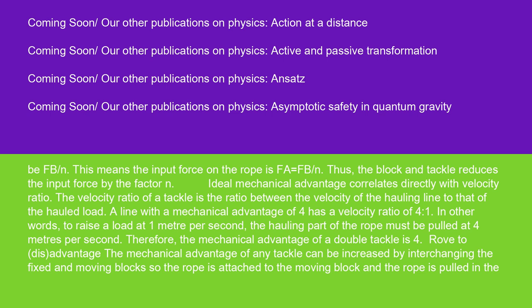Ideal mechanical advantage correlates directly with velocity ratio. The velocity ratio of a tackle is the ratio between the velocity of the hauling line to that of the hauled load. A line with a mechanical advantage of 4 has a velocity ratio of 4 to 1. In other words, to raise a load at 1 meter per second, the hauling part of the rope must be pulled at 4 meters per second. Therefore, the mechanical advantage of a double tackle is 4.